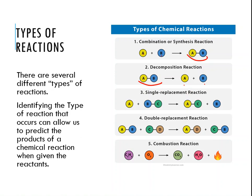A single replacement reaction is where one element replaces another. We have element A and compound BC; in the products we have compound AC and element B — A and B switch places. In a double replacement reaction, two compounds react together, and two elements replace each other. So with reactants AB and CD, our products are AD and CB — cation A and cation C switch places.